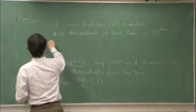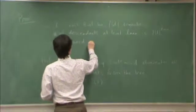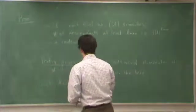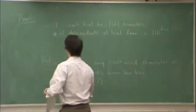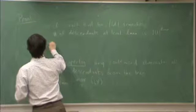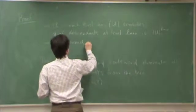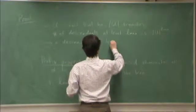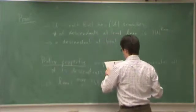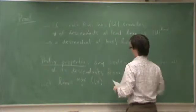If I have a codeword, excuse me, let me back up. A descendant at level Lmax is one of three things.